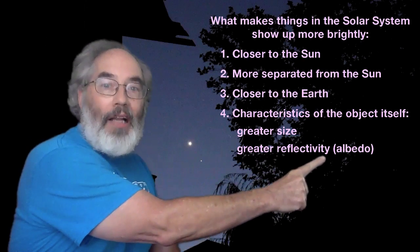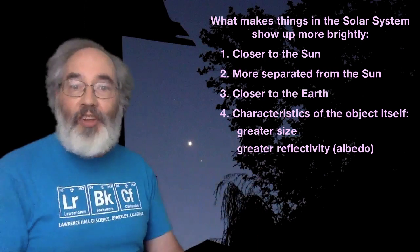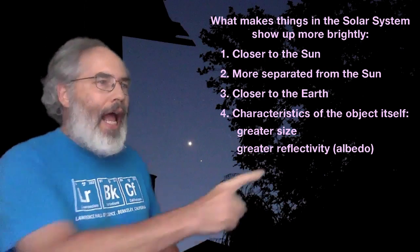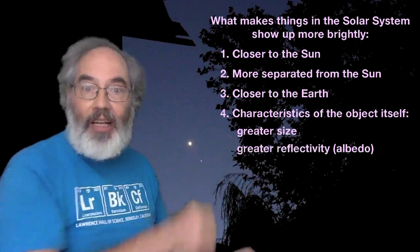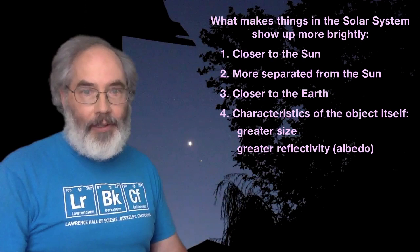Oh, there's this word albedo. In different scientific disciplines, they have different words that mean the same thing. And albedo is the word scientists who study space use to describe how reflective things are.